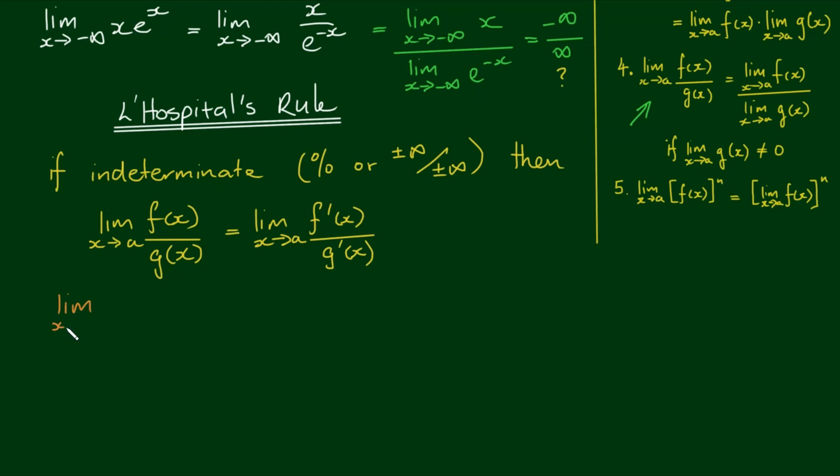So with that, the limit as x approaches negative infinity of x over e to the negative x, we can evaluate that as the limit as x approaches negative infinity. The first derivative of x is equal to 1, and the first derivative of e to the negative x is negative e to the negative x. Okay, so the top limit remains as 1, the bottom limit goes to negative infinity. So the answer is, the negative can come out the front. 1 over an arbitrarily large number is going to approach 0. So we have negative 0, which is equal to 0.